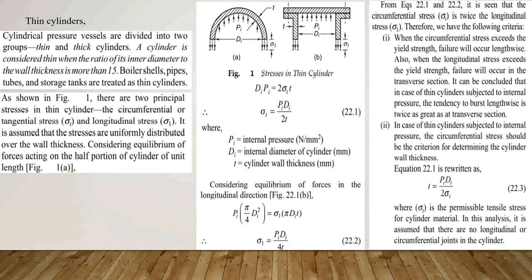Thin cylinders are used in boiler shells, pipe tubes, and storage tanks. In figure number 1, we see the stresses generated in thin cylinders.